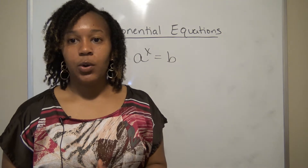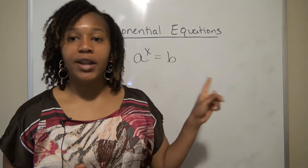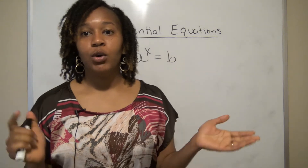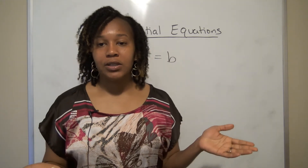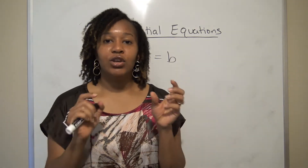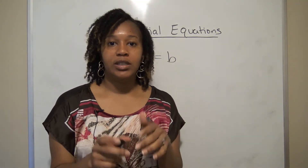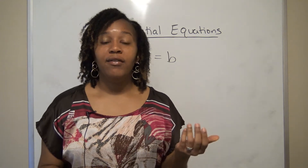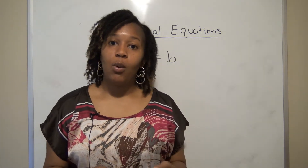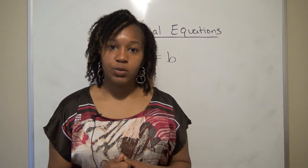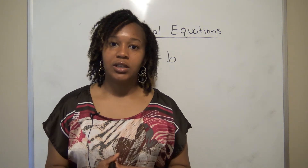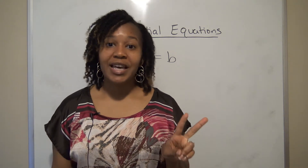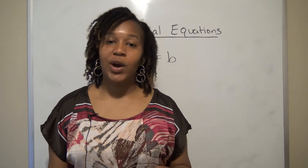In the previous video I showed you how to solve exponential equations by rewriting both sides so that they have the same base. If you could do that, you could set the exponents equal to each other and solve for the variable. However, you cannot always rewrite both sides to have the same base.